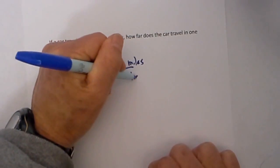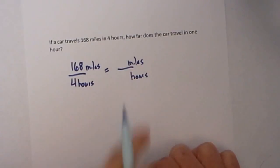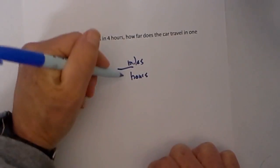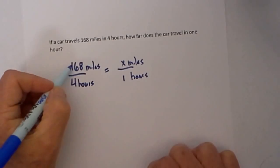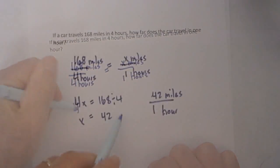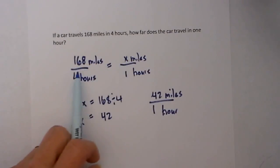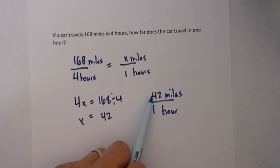I know 1 hour is here so the miles will be x. Cross multiply x times 4. When I cross multiply I get 4x equals 168. Solve for x by dividing both sides by 4. So 168 divided by 4 equals 42. I can rewrite that as 1 hour equals 42 miles. That tells us that the car will travel 42 miles in 1 hour.